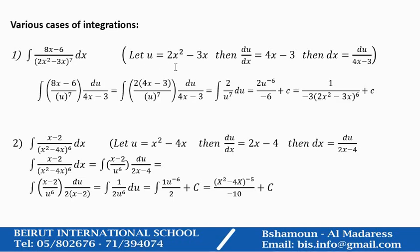So we say let u equal 2x squared minus 3x. You find du/dx, then you find dx in terms of du. Second step is you substitute — you take two common factors. 4x minus 3 will be eliminated. You end up with the integration of 2 over u to power 7 du, which is 2u to power minus 6 over minus 6 plus c, which is 1 over minus 3 times (2x squared minus 3x) to power 6 plus c.